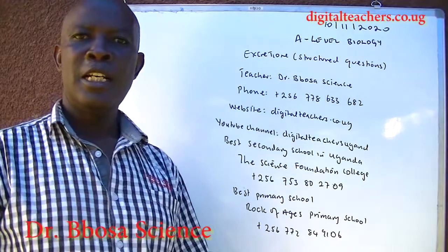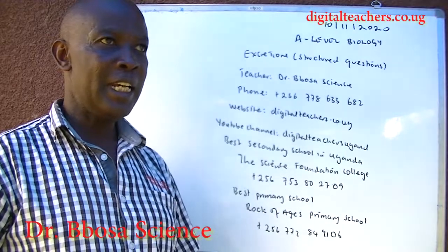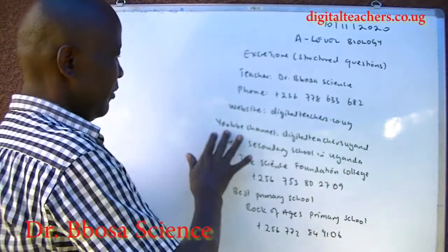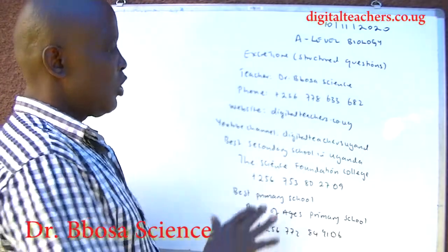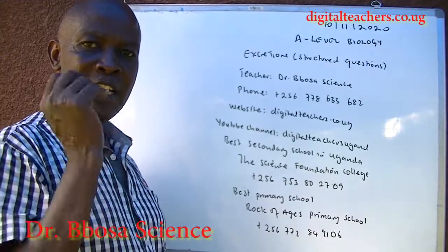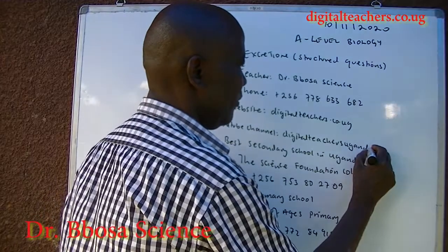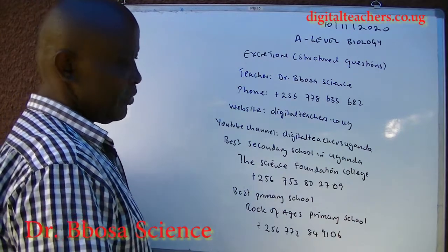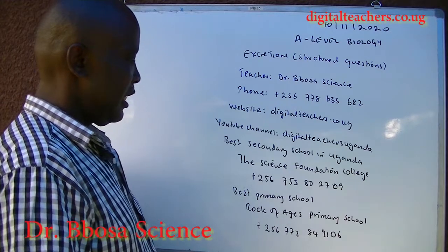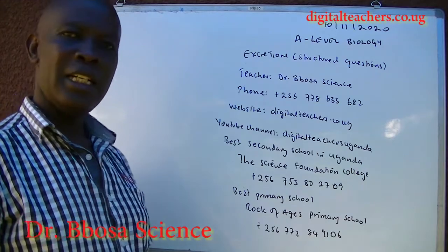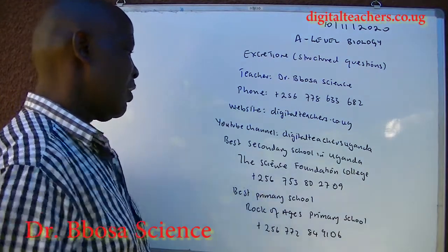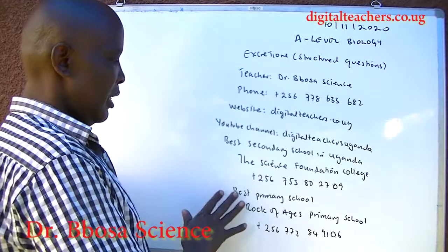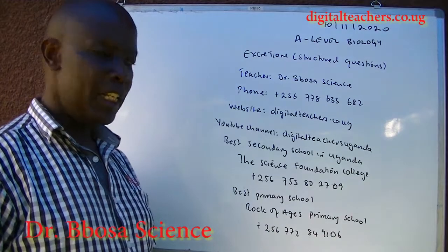Here find notes, exams and their marking guides in physics, chemistry, biology and math. Or you can visit our YouTube channel — go to YouTube, where there is a search, type in Digital Teachers Uganda. You will be given videos in physics, chemistry, biology and math from primary 7 to S6. The best secondary school in Uganda is the Science Foundation College, plus 256-753-802-709. The best primary school is Rock of Ages Primary School, plus 256-772-849-106.